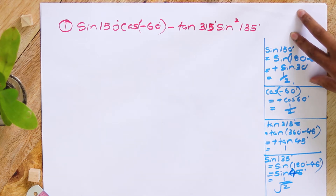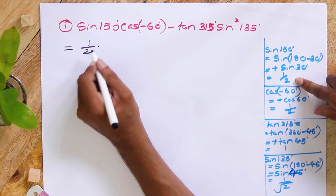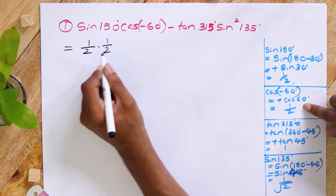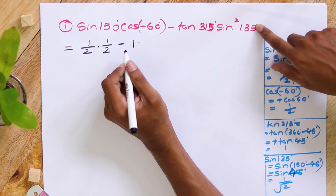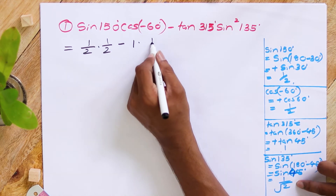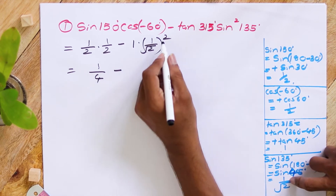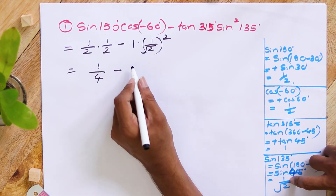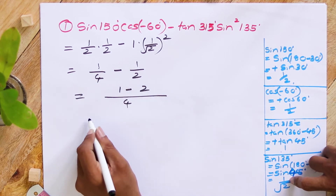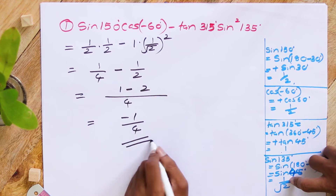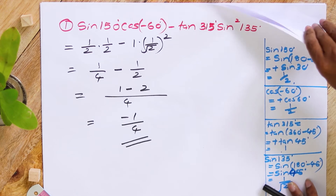Now we substitute these values to simplify the trigonometric expression. Sine 150° is one half, cos(-60°) is one half, tan 315° is 1, and sine squared 135° is (1/√2)² = one half. So it becomes 1/4 minus 1, with a common denominator giving 1 minus 2 over 4, so the answer is minus one quarter.